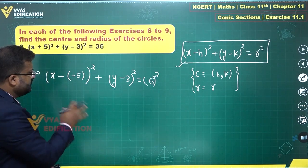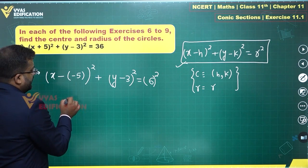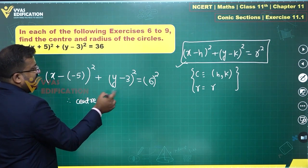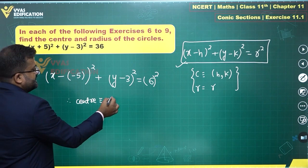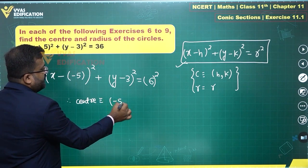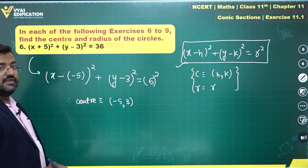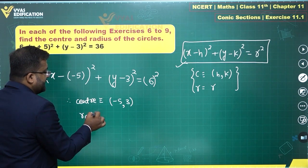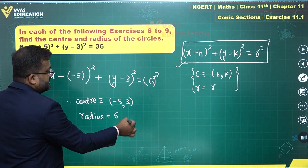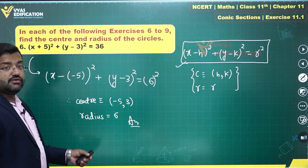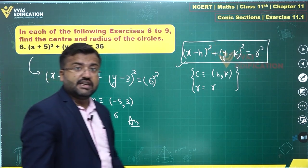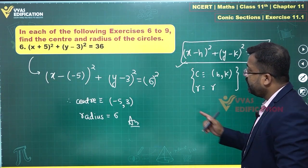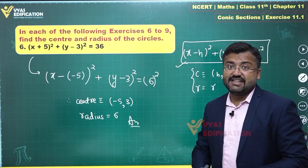Comparing these two, therefore the center of the circle will be h, k, and what is that? This is minus 5, 3. Center is (minus 5, 3), and radius is equal to 6. And yes, that's the answer for this question. As you can see, after comparing with this particular form, you can get the center and radius easily.